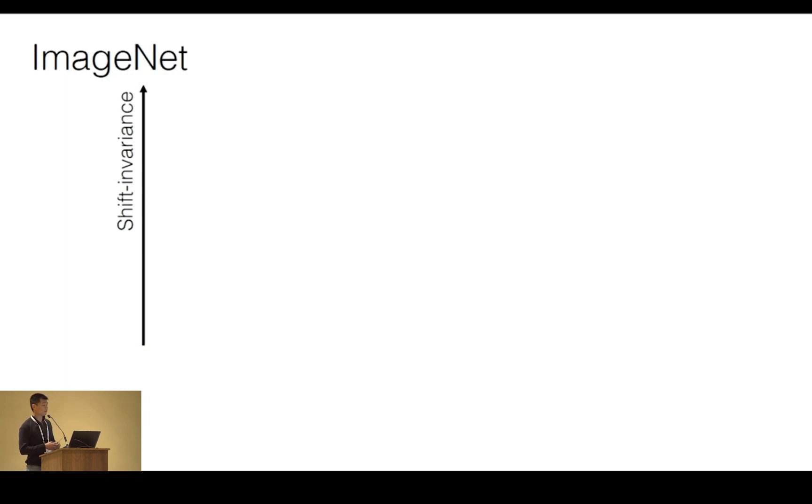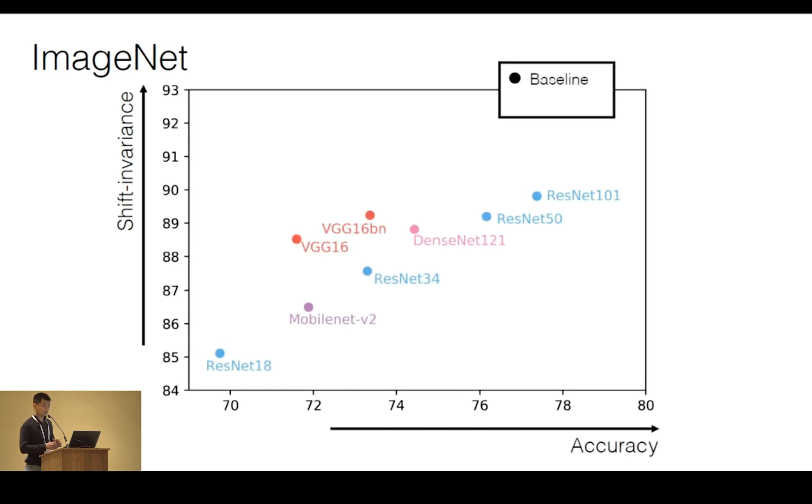So we're going to do that here for a large-scale ImageNet classification test. On the y-axis, we're going to plot shift invariance. So this is the probability that two shifts of the same image are classified the same. And on the x-axis, we can plot accuracy. And here's a whole bunch of networks, such as VGG, DenseNet, ResNet Family, and MobileNet on these two axes.